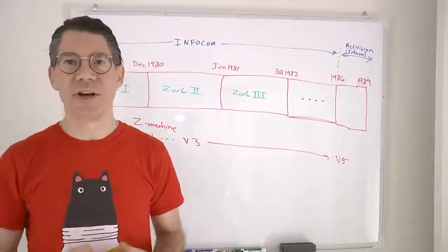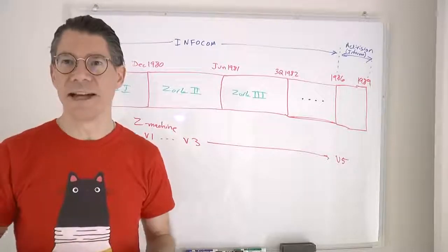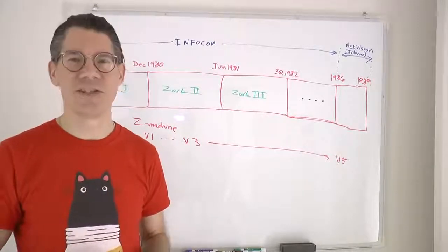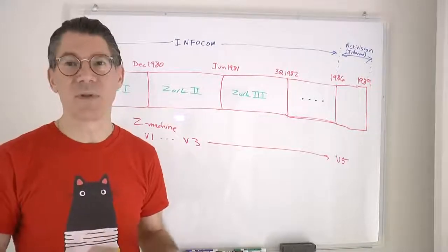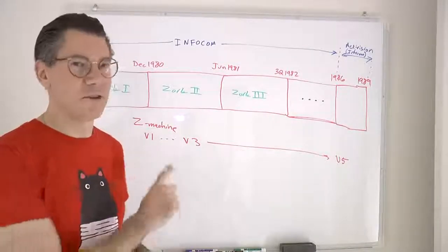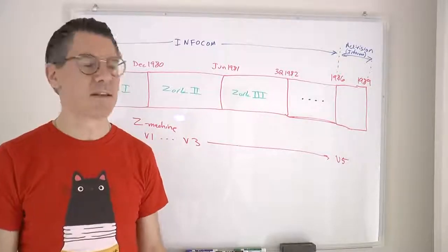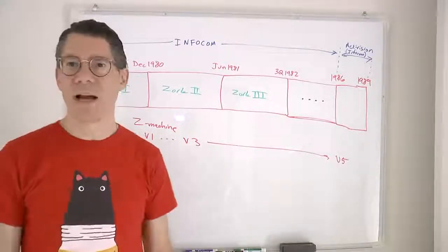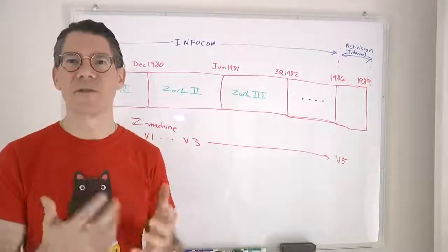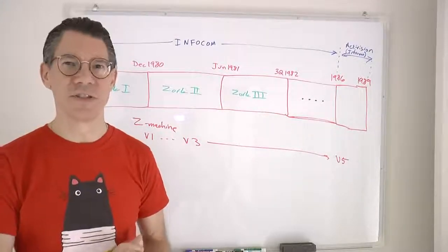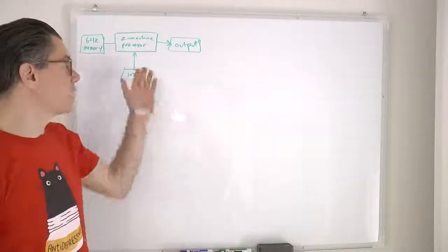There's also another virtual machine called Glulx — G-L-U-L-X — which is a completely different machine from the Z-Machine. It starts from a completely new base, so perhaps we will look into implementing that after we finish our versions of the Z-Machine. At its core, the Z-Machine looks pretty much like any other CPU.